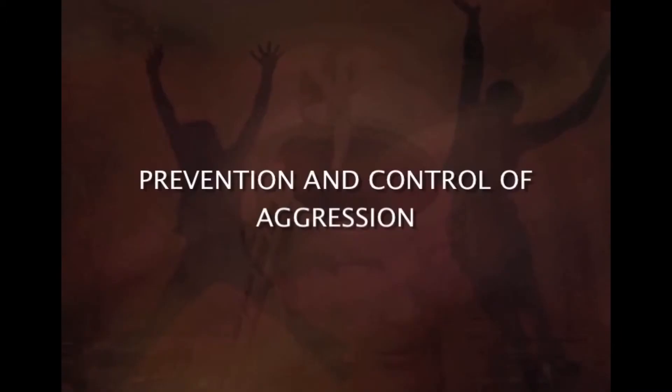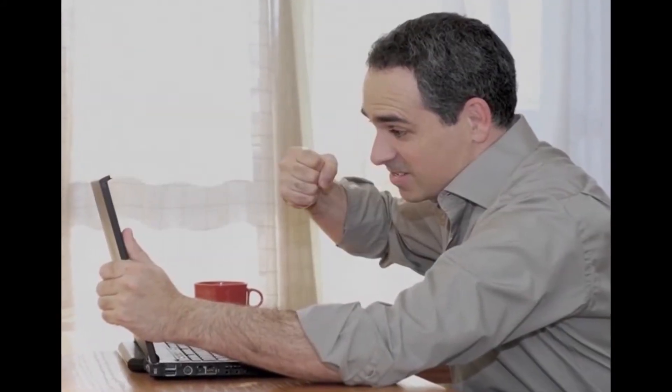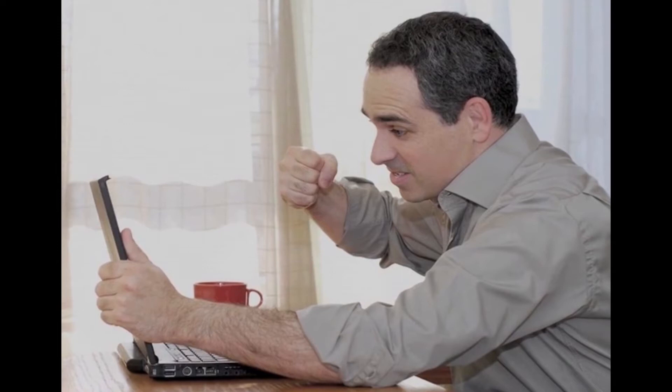Hello everyone, today we are going to learn about the chapter prevention and control of aggression in human beings. The objectives of this lesson are to understand the several procedures and techniques that are useful in reducing the frequency and intensity of human aggression.